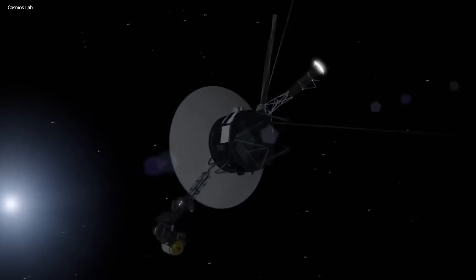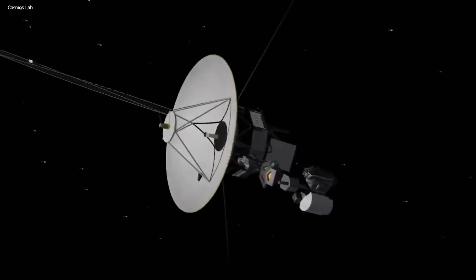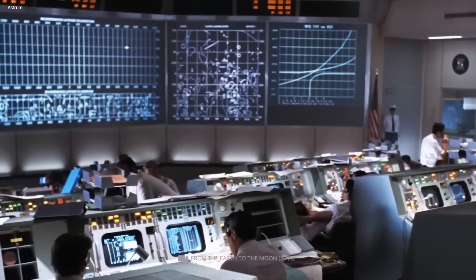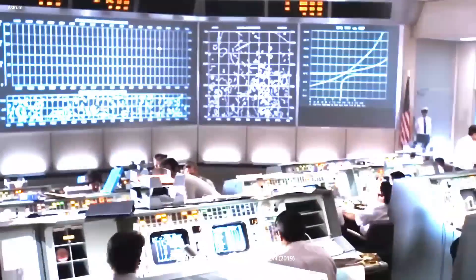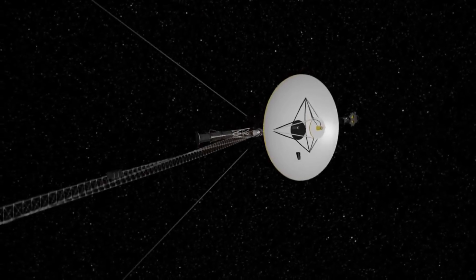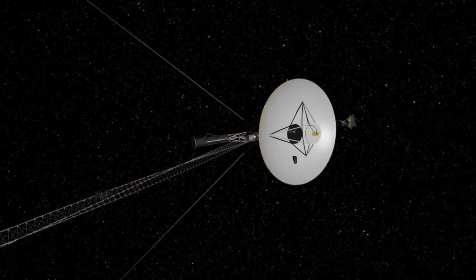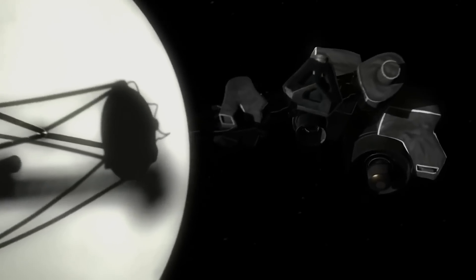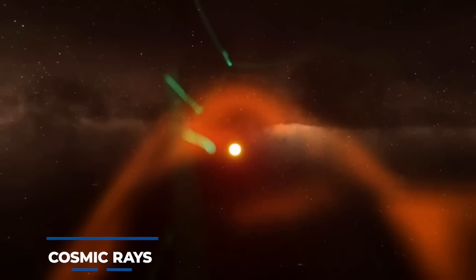Voyager 1 has been traversing outer space for over four decades, surpassing its original mission expectations. Initially projected to survive for only five years, the spacecraft has defied all estimates. However, a recent development has taken its accomplishments even further. Voyager 1 has detected unknown objects passing through space, fundamentally altering our understanding of the cosmos.